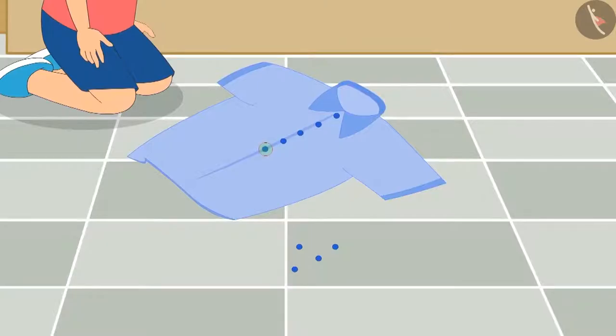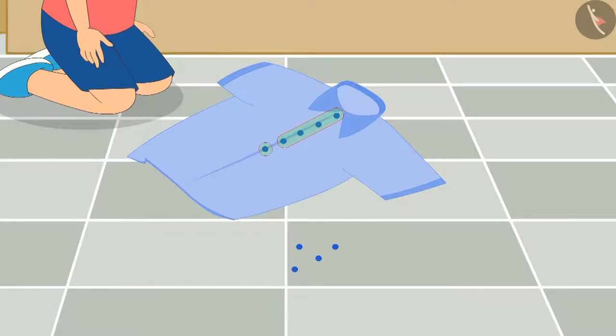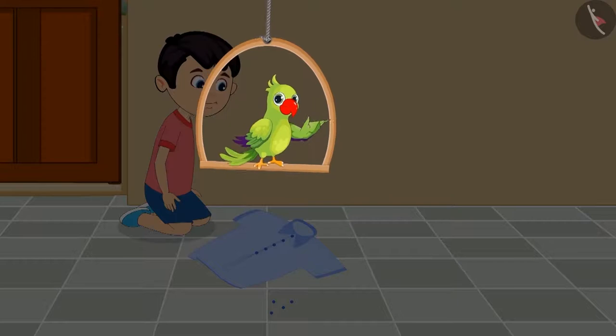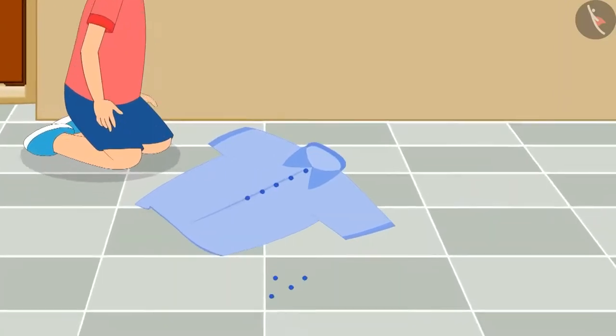Now, Chutu has stitched one more button on his shirt. So, four buttons and one more button is five buttons. Now, count and tell how many buttons are stitched on Chutu's shirt. Yes, you are absolutely correct. Total of five buttons.